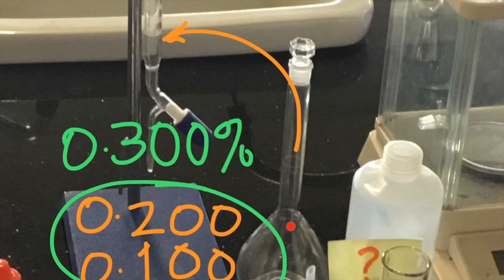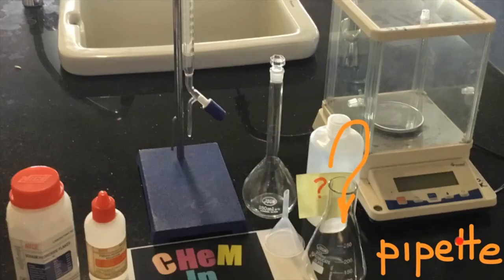The student then transferred this standard solution, 0.1 mol per dm³ sodium hydroxide, into a burette. Then a pipette was used to remove exactly 10 millilitres of the hydrochloric acid of unknown concentration, and this was placed into this Erlenmeyer flask, and one drop of phenolphthalein indicator was added,